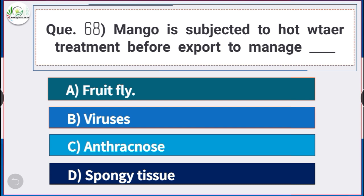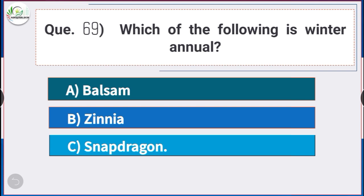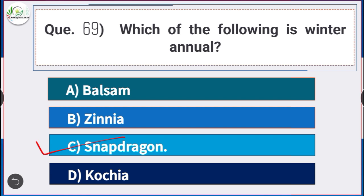Question number 68: Mango is subjected to hot water treatment before export to manage — answer option A — fruit fly. Question number 69: Which of the following is a winter annual? Answer is option C — snapdragon. Snapdragon is an example of a winter annual.